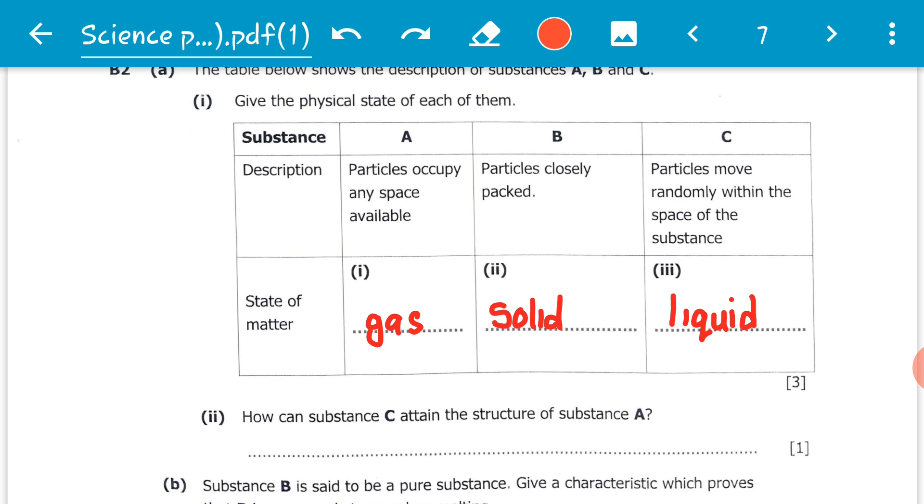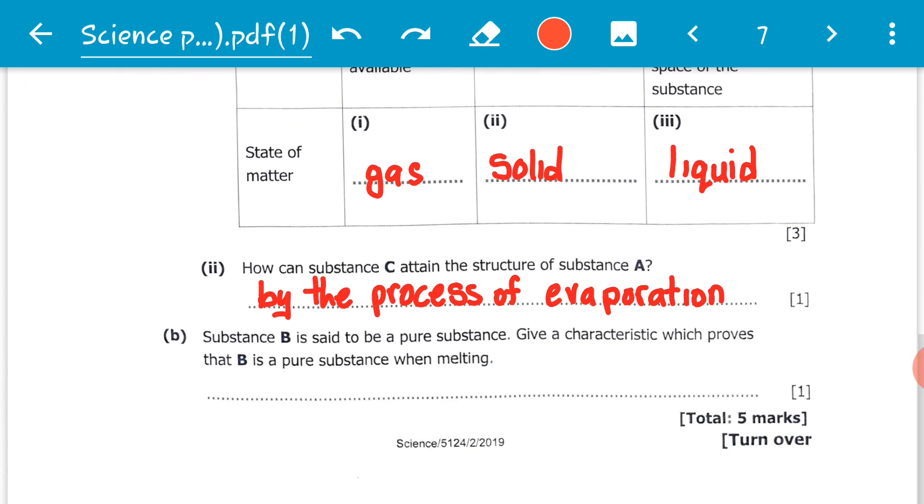We know that the change of state from liquid to gas has two processes: one is called evaporation, the other one is called boiling. The difference between the two is that evaporation takes place at any given temperature, while boiling occurs at a specified or definite temperature. Therefore, to pick the best answer for this question, because we have not been given any temperature restriction, we will go with evaporation. So the process that enables substance C to attain the same structure as substance A is evaporation.